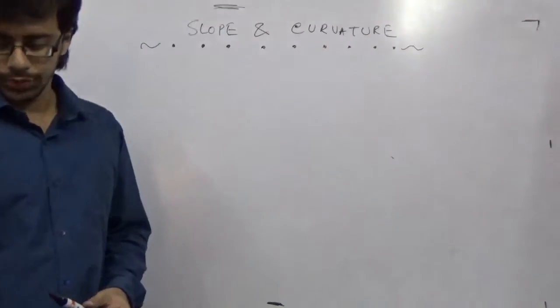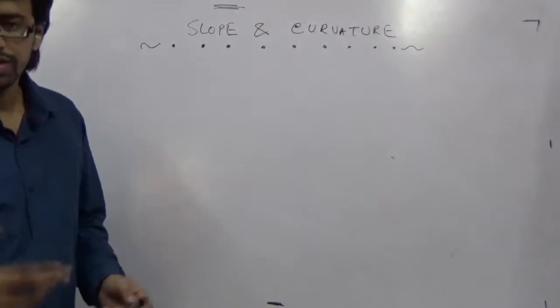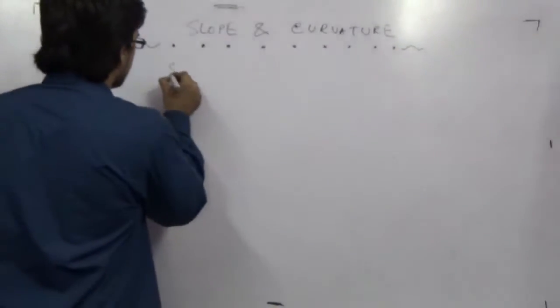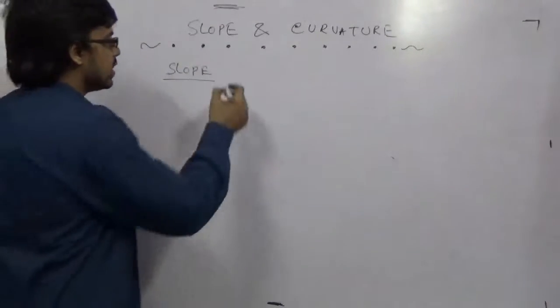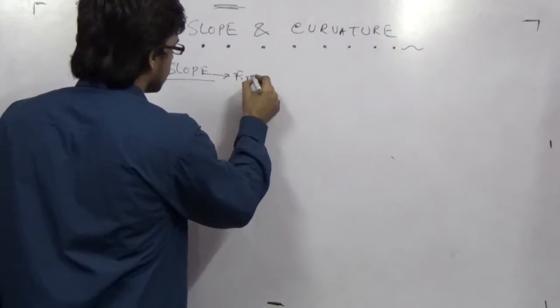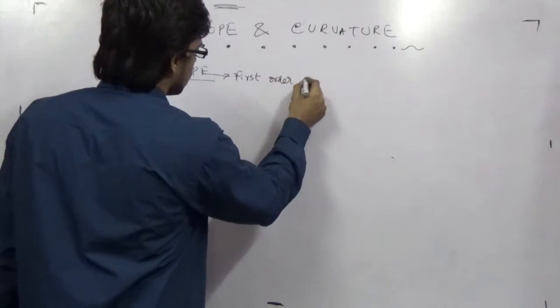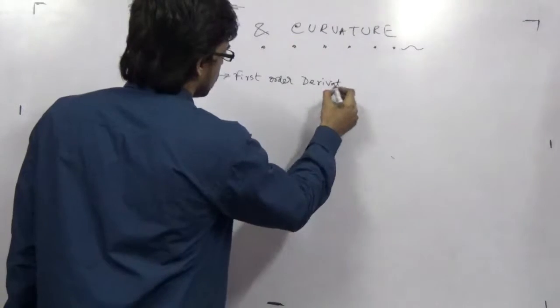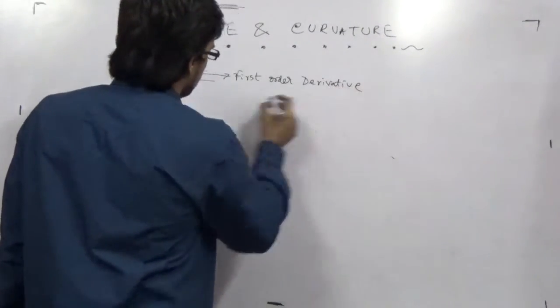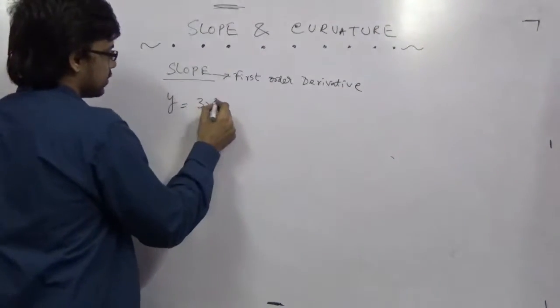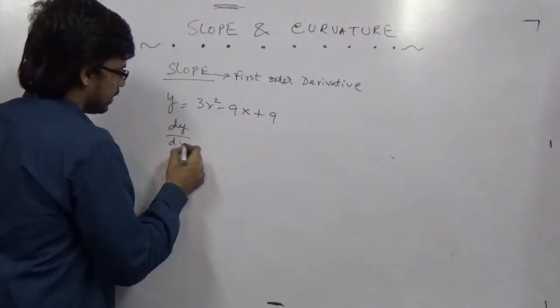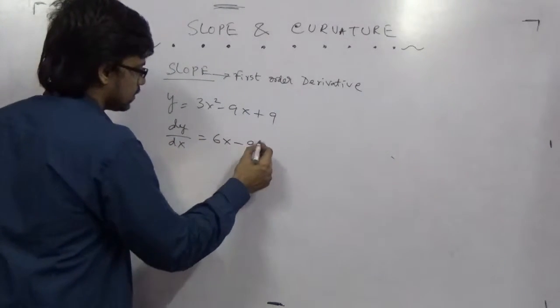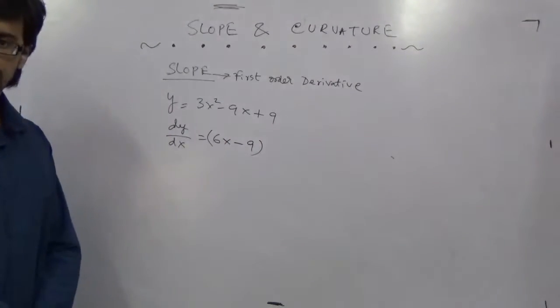Now we are going to explain how they are different. Slope means simply the first order derivative. For example, y = 3x² - 9x + 9. So the slope will be dy/dx = 6x - 9. That's it, this is the slope.